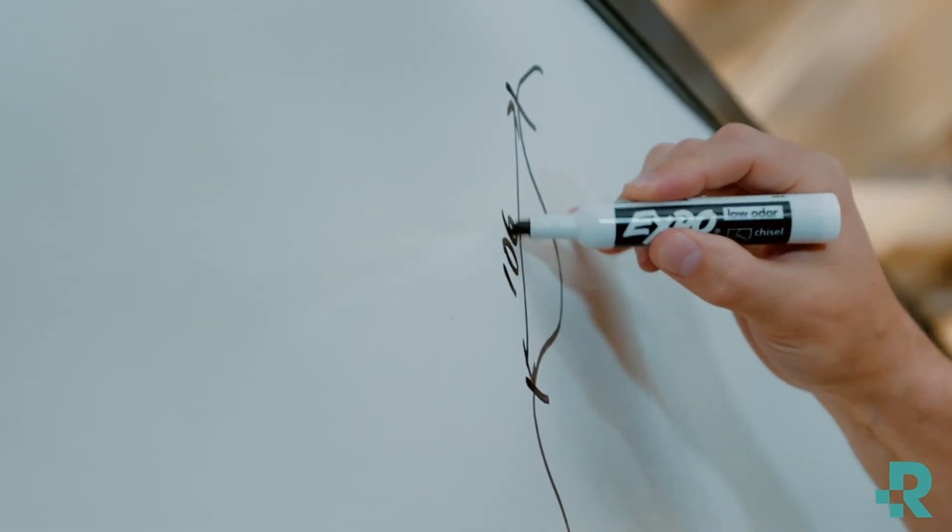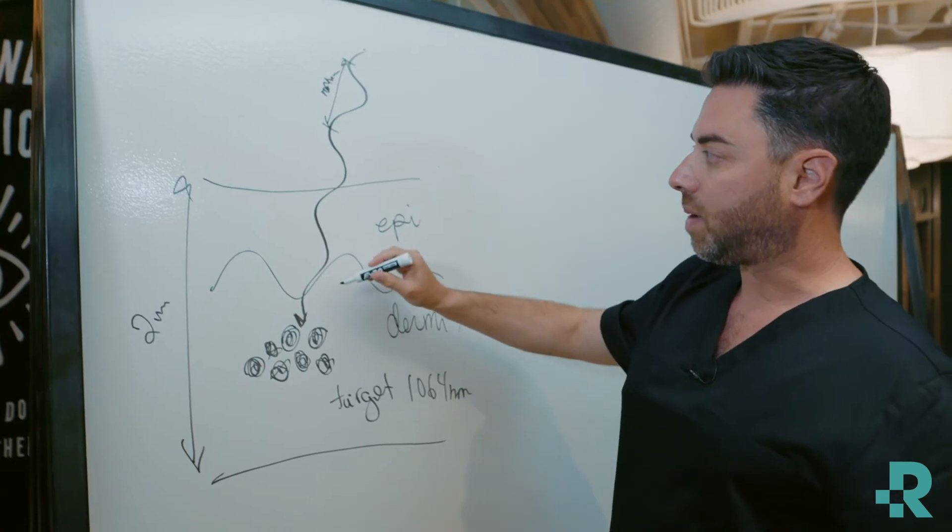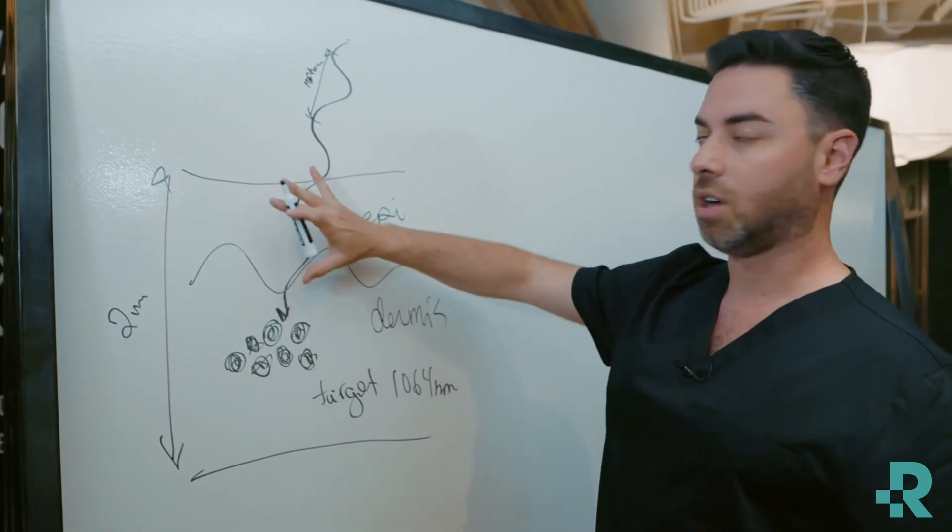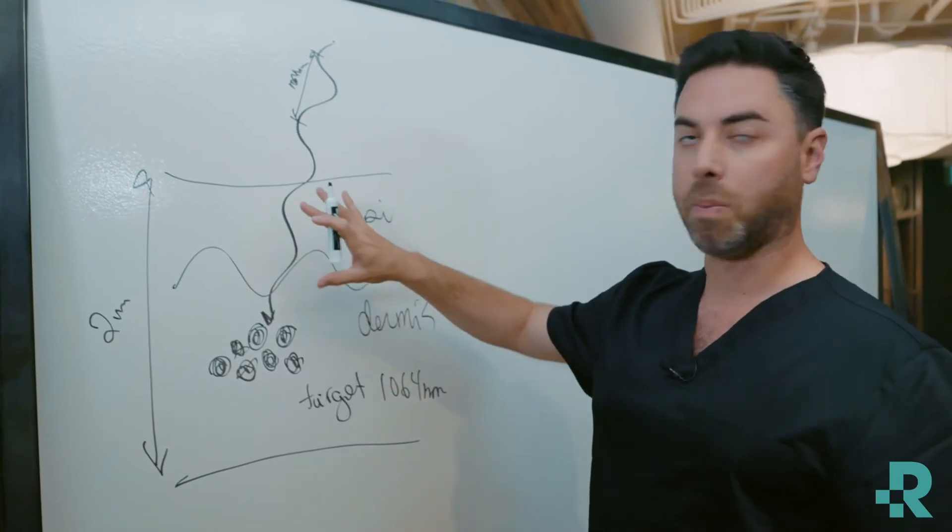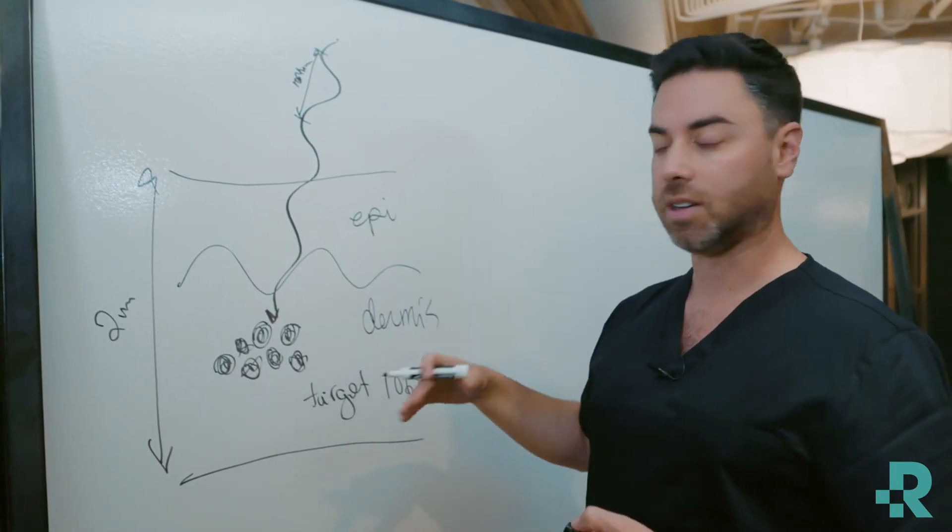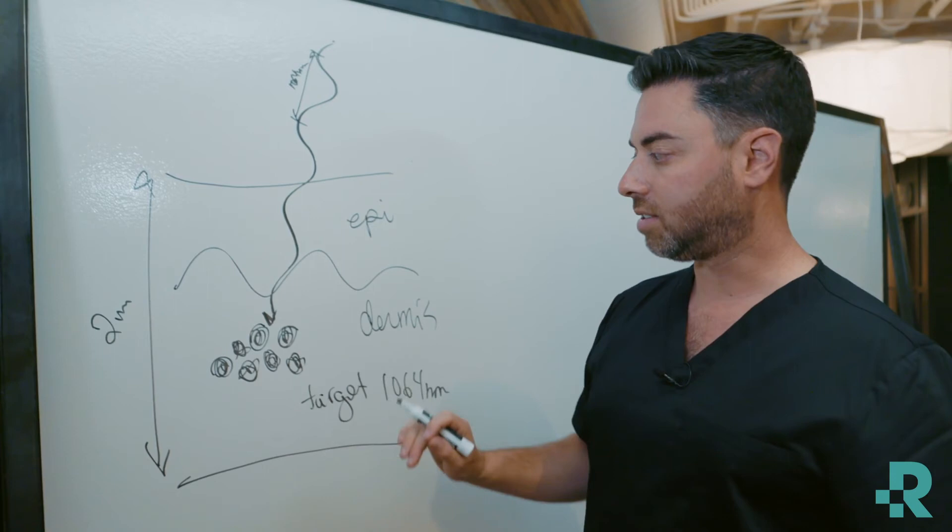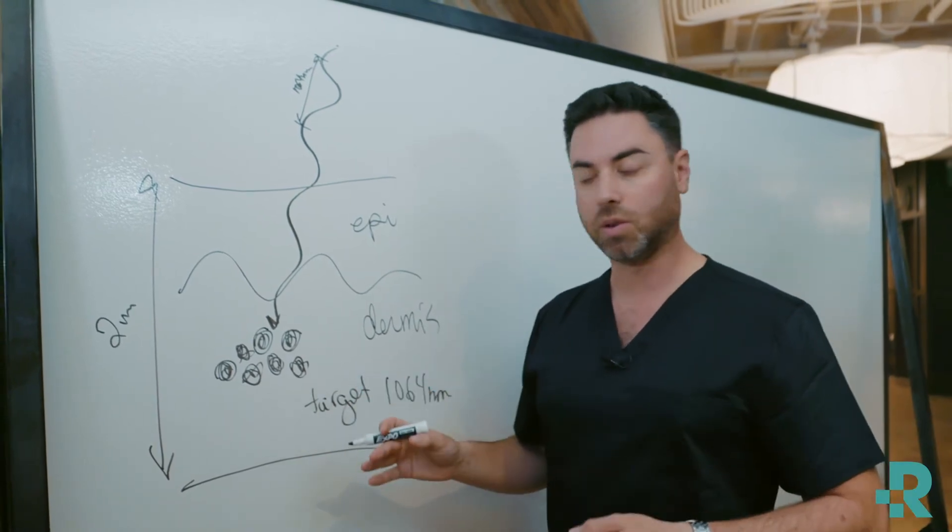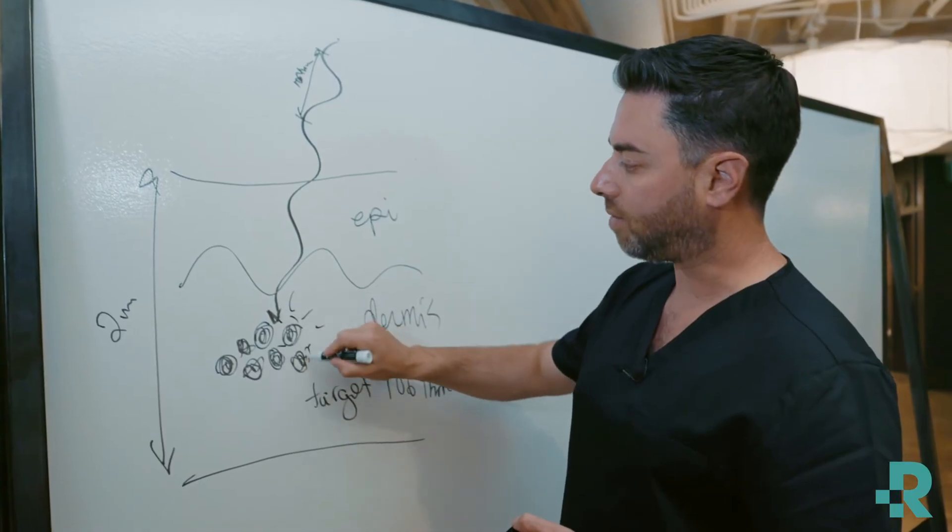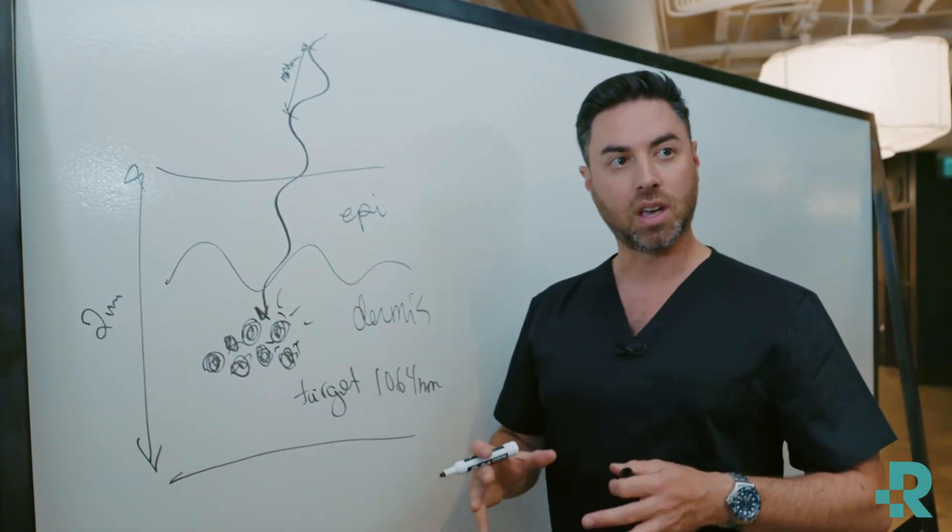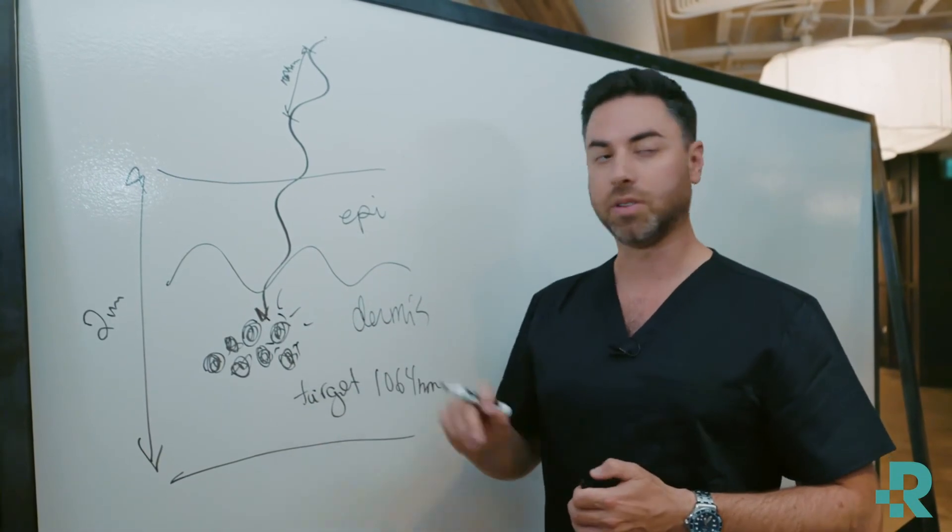As that energy passes through the skin, there is no injury or damage to the uppermost layers of the skin because there's no pigment to absorb that energy. Once that energy hits our target, the ink molecules, it gets absorbed, and then bam, you have a little photoacoustic micro-explosion of those ink molecules.